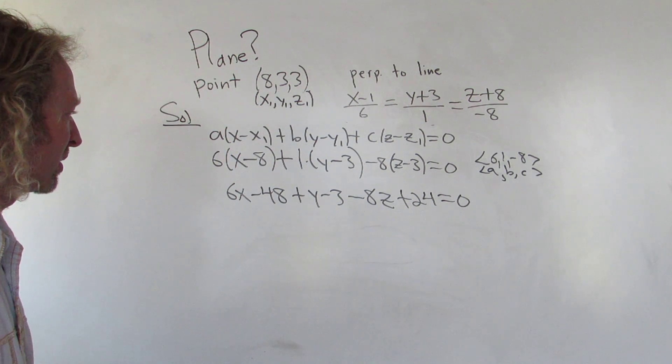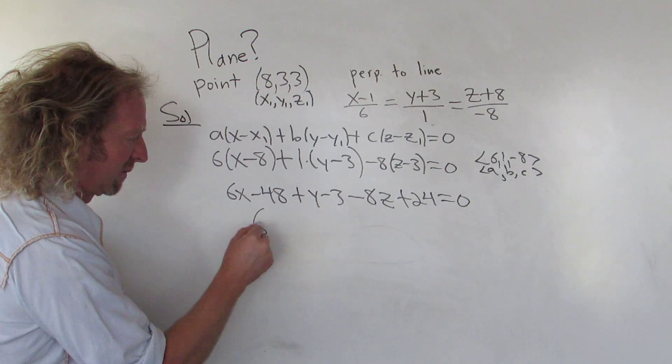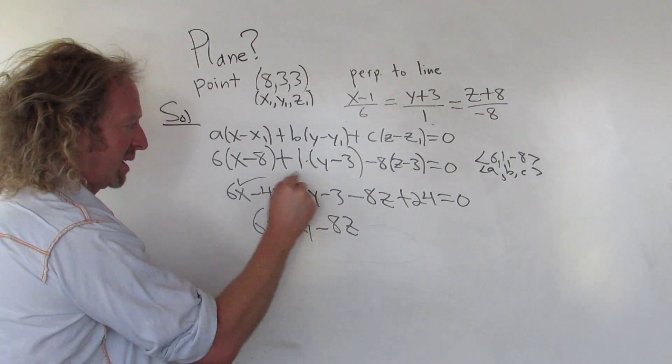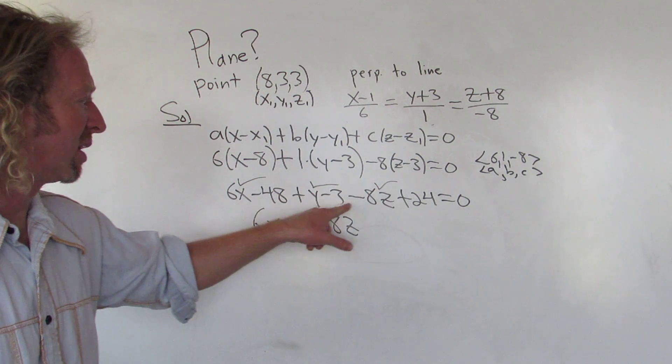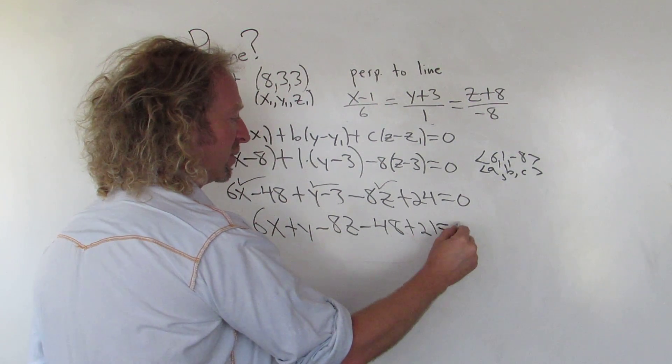All right, so now we just collect like terms. So let's see. So 6x plus y minus 8z. That takes care of the 6x, the y and the 8z. And then we have negative 48 plus 21. So negative 48 plus 21 equals 0.